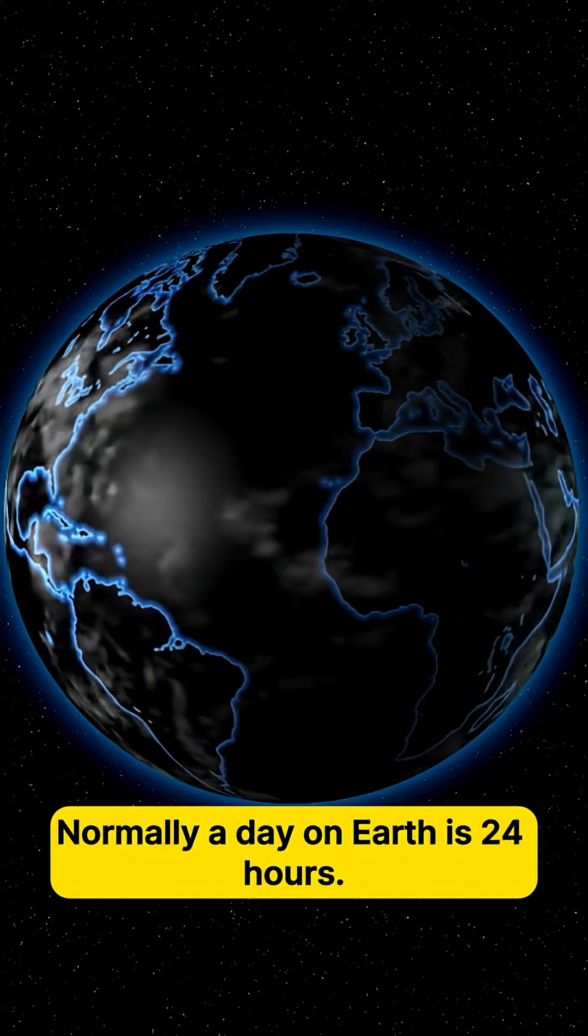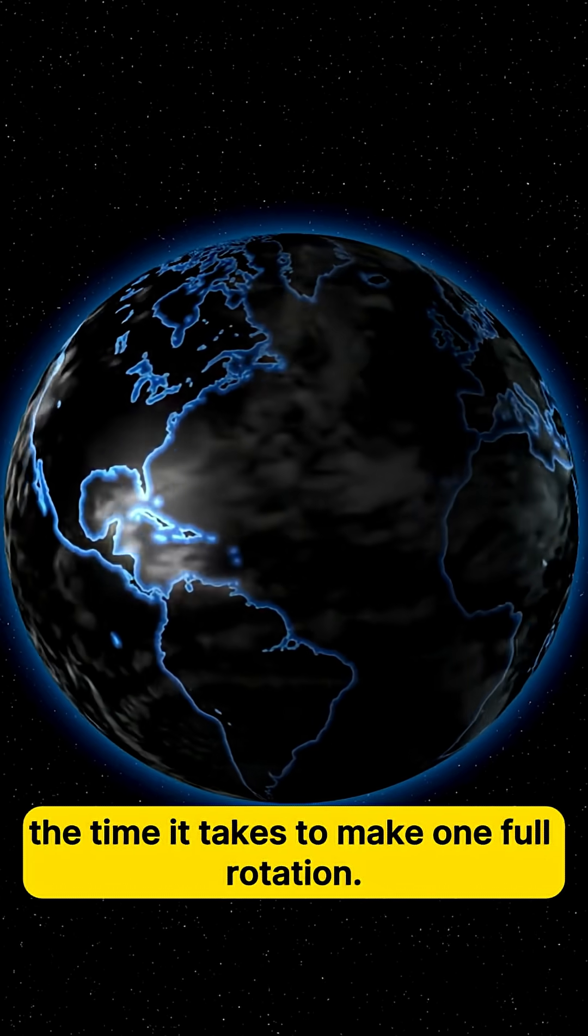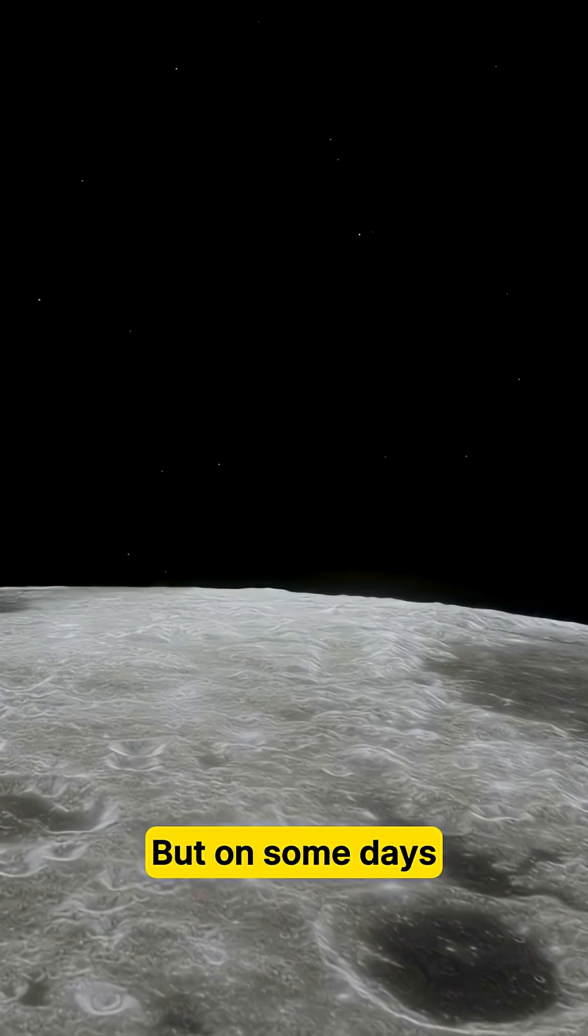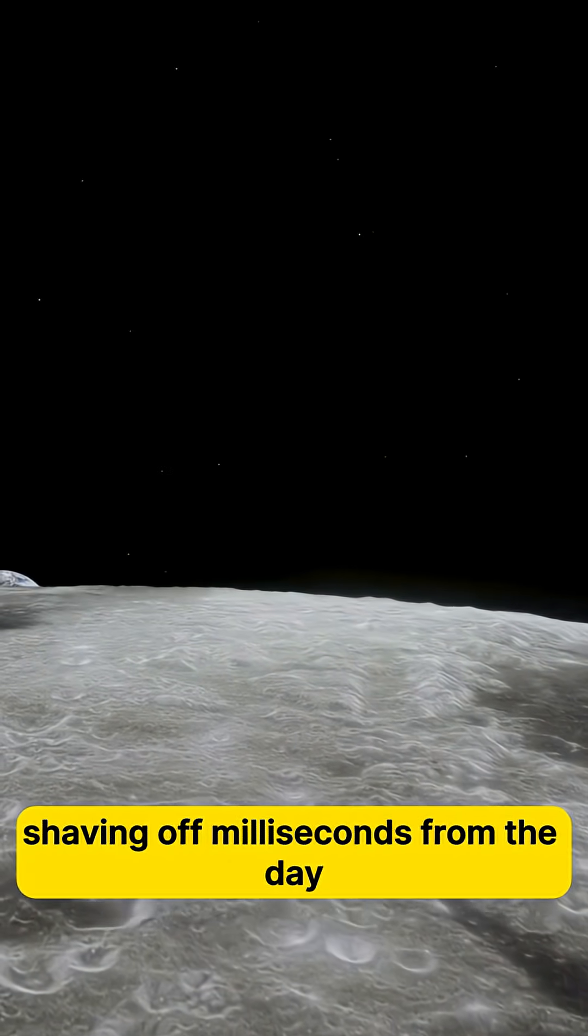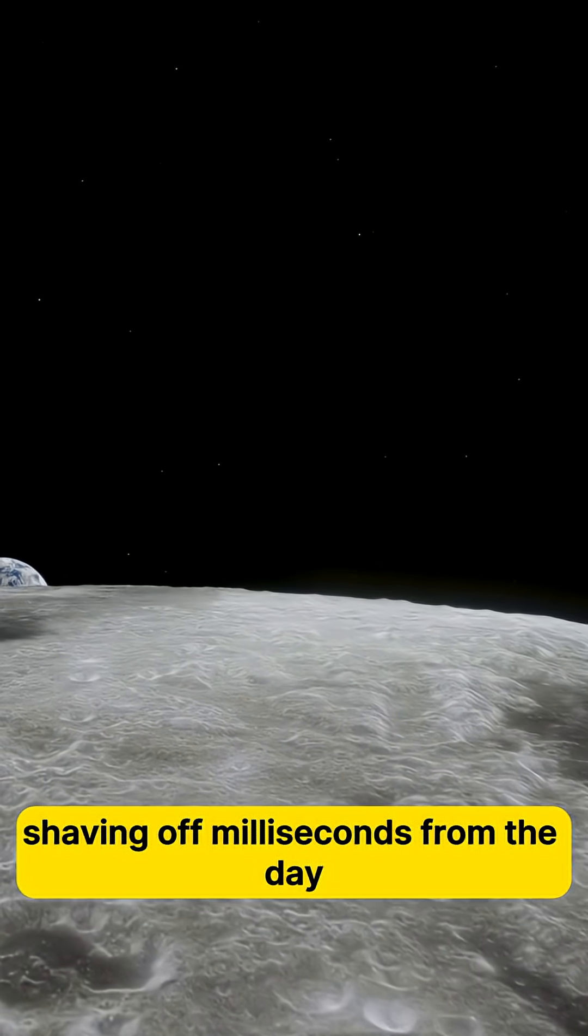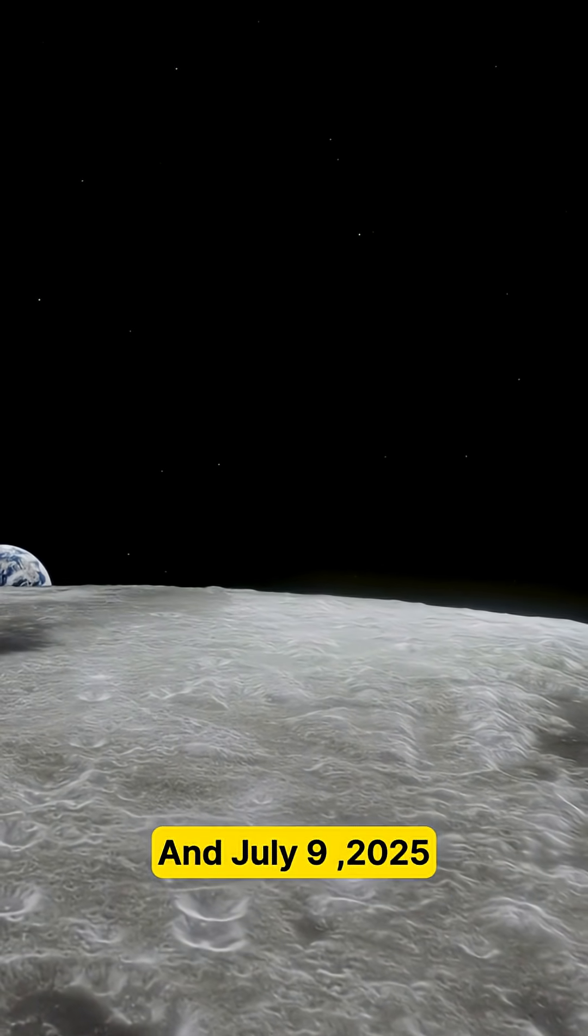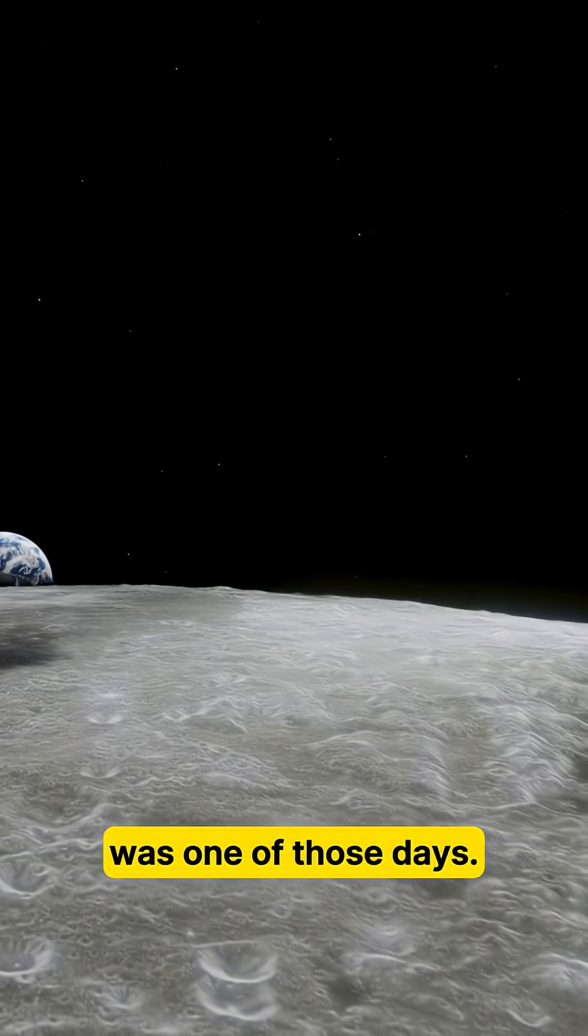Normally, a day on Earth is 24 hours, the time it takes to make one full rotation. But on some days, Earth spins just a tiny bit faster, shaving off milliseconds from the day. And July 9th, 2025, is one of those days. Why?